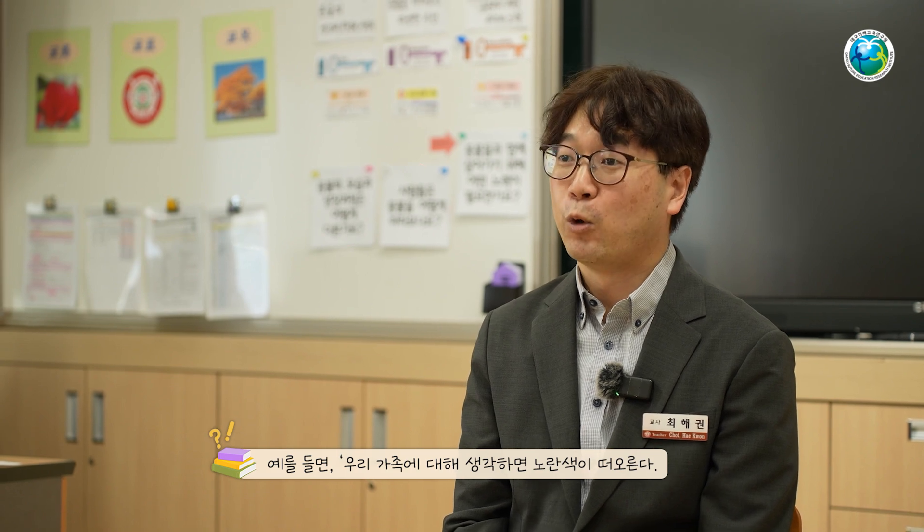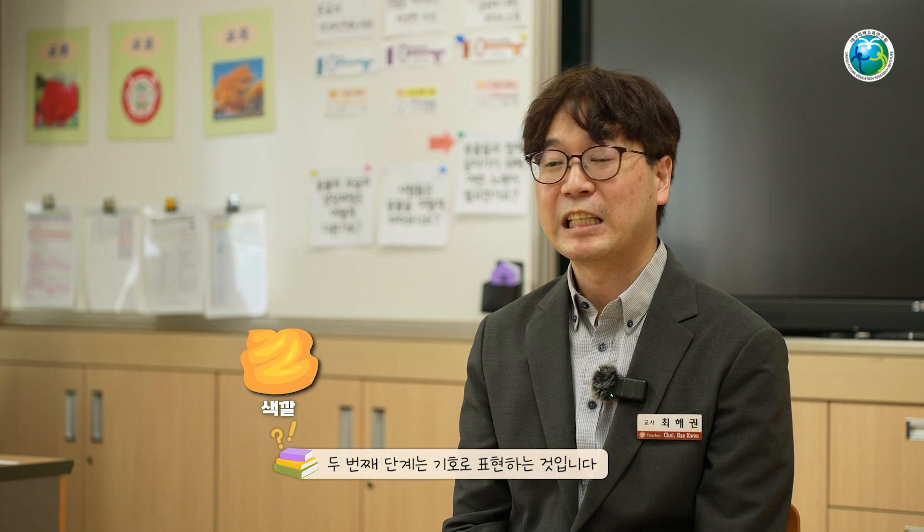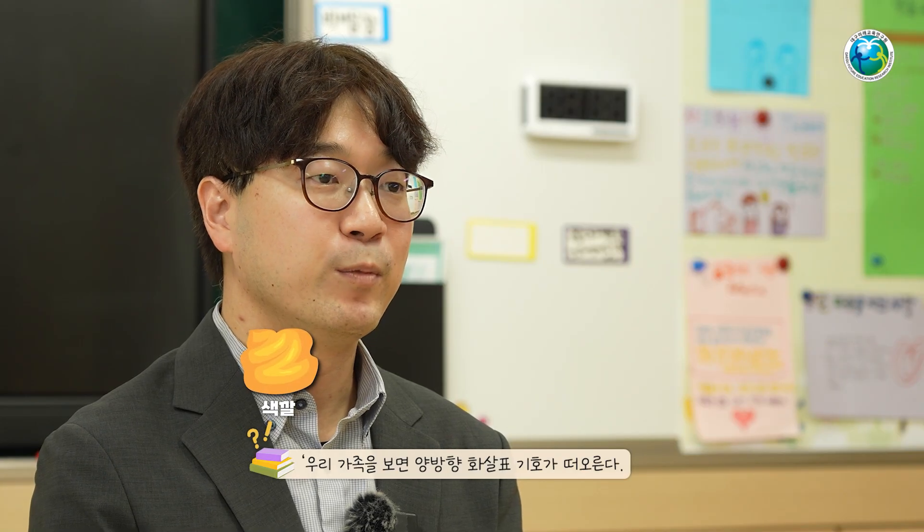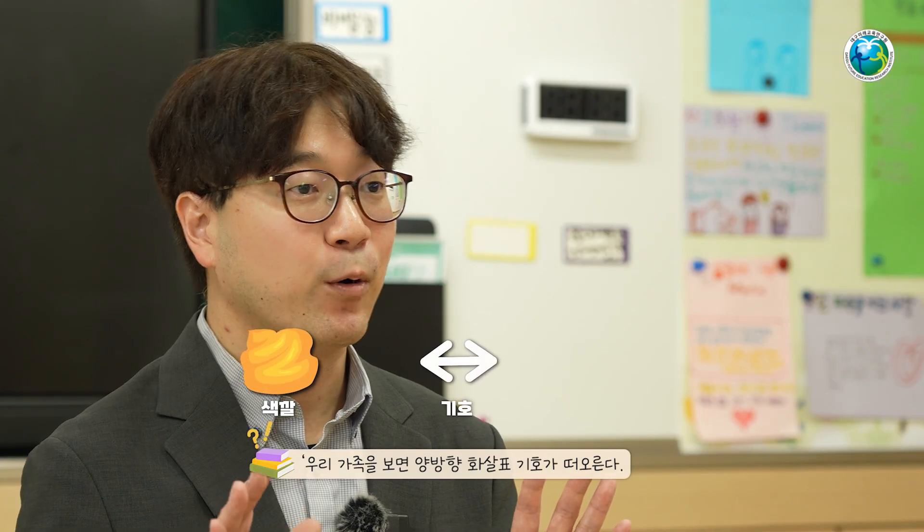예를 들면 우리 가족에 대해 생각하면 노란색이 떠오른다. 왜냐하면 우리 가족 구성원들은 마음이 착해서 따뜻한 느낌의 노란색과 어울리기 때문이다. 이런 식으로 표현할 수 있고요. 두 번째 단계는 기호로 표현하는 것입니다. 우리 가족을 보면 양방향 화살표 기호가 떠오른다. 왜냐하면 우리 가족에서는 혼자만 말하지 않고 서로 소통하는 것이 중요하기 때문이다.